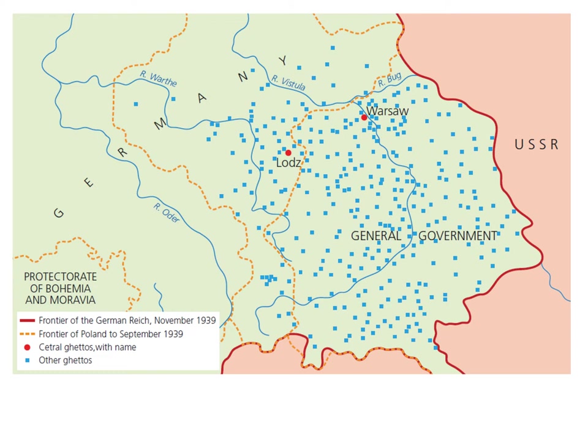Ghettos were all over Poland. This map of the General Government — which is what Poland was renamed — shows all of the ghettos, with blue dots marking ghettos and red dots marking large ghettos. There was a large ghetto in Warsaw, which we'll look at in a minute. What I'm hoping you'll see from this map is that ghettos were everywhere, and the Jews from the entirety of this country were put into these small, tiny places.